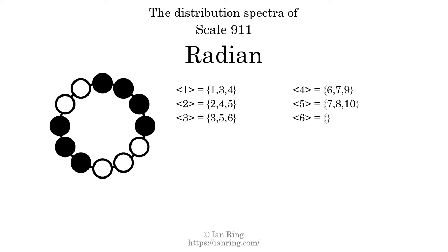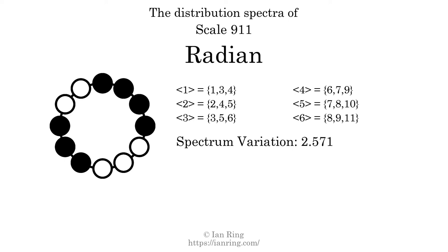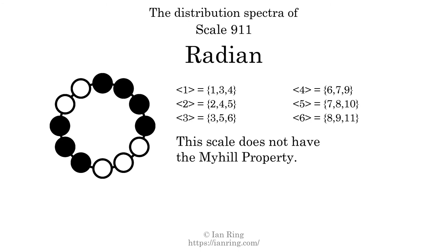The spectrum variation is the sum of all the widths divided by the number of tones. The spectrum variation of this scale is 2.571. Since the variation is greater than 0, this indicates that the scale is not perfectly even. The highest spectrum width is 3; since this is greater than 1, this scale is not maximally even. This scale does not have the Myhill property. Since the generic interval ranges overlap, this scale is an improper scale.